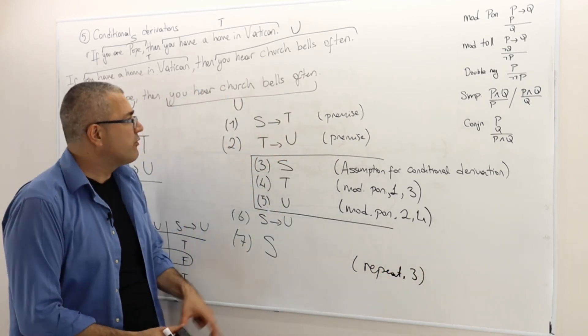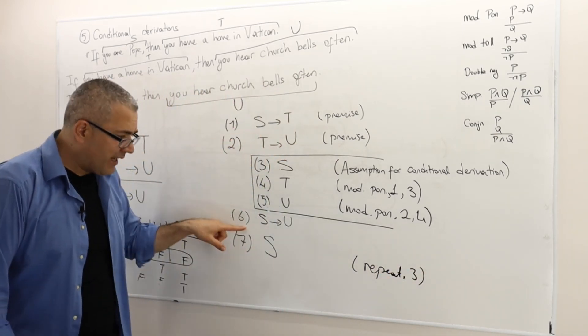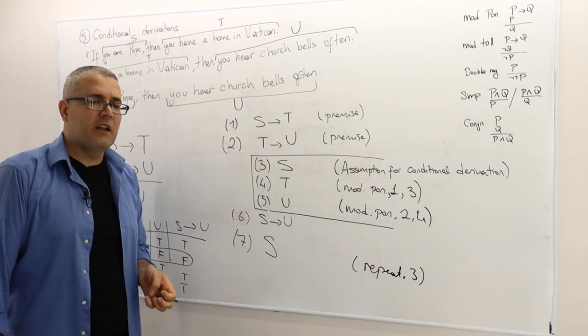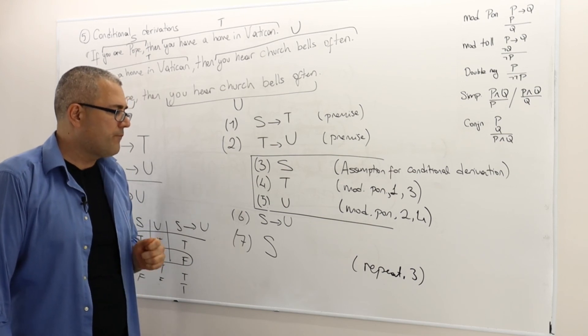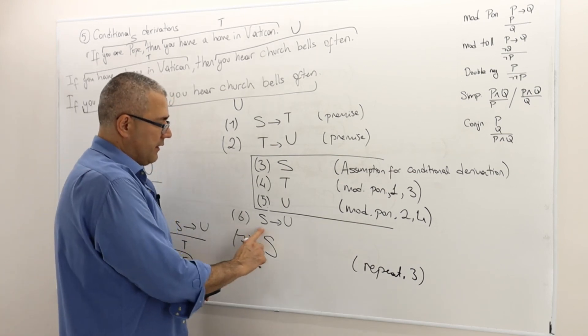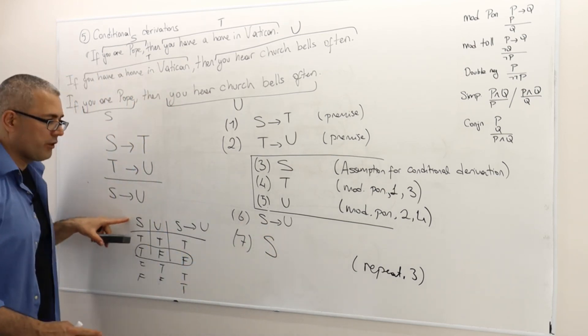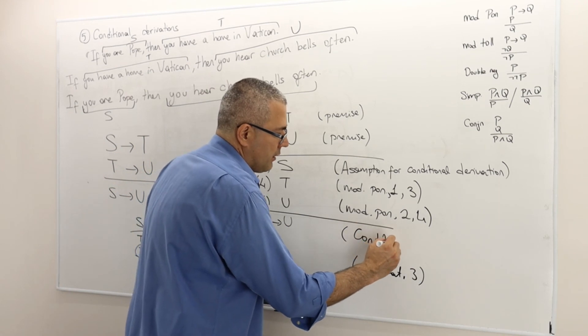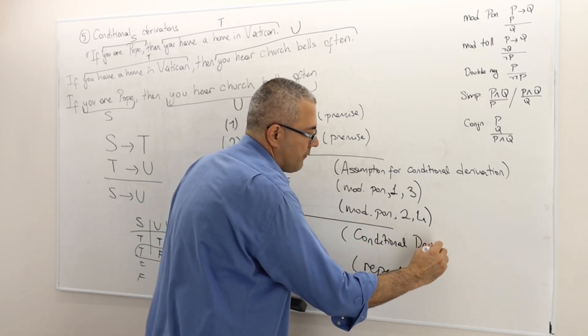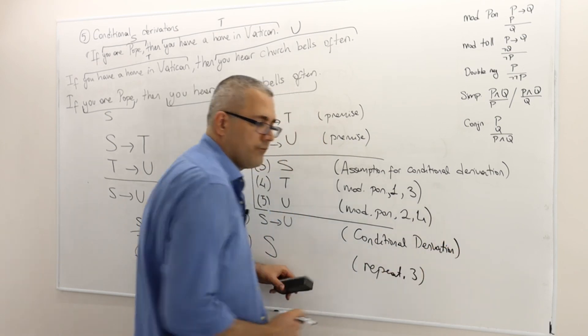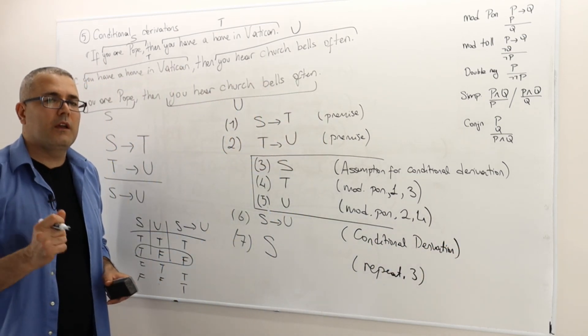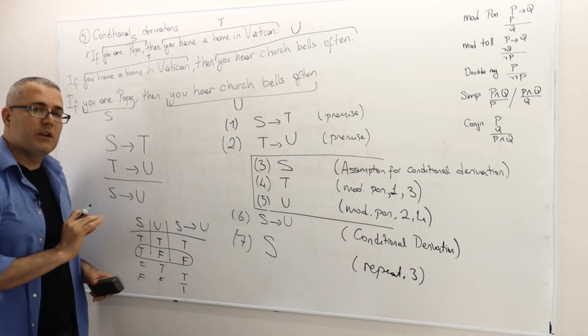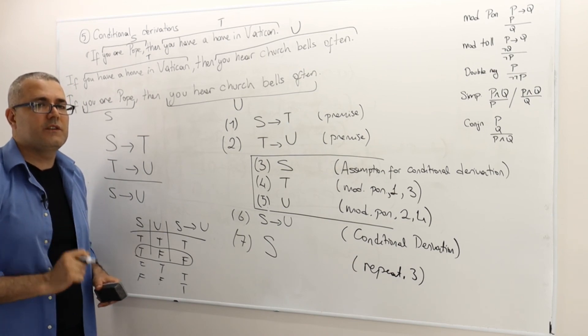I can't repeat line one, line two. I can repeat line six as many as I like, but I can't repeat any lines in between three and five. So one final thing, this conclusion, which is what I was trying to achieve, we call this conditional derivation. And so this is how we prove an argument with a conclusion with a conditional sentence.